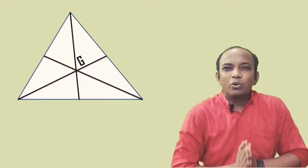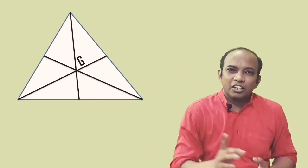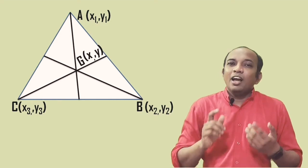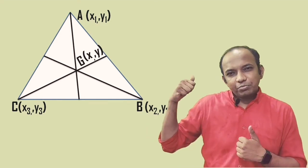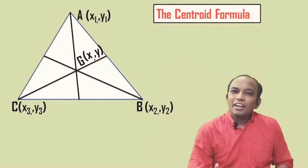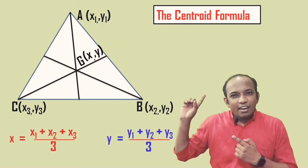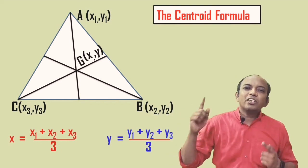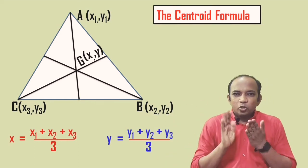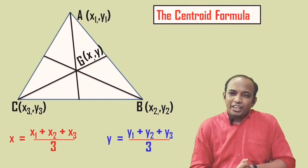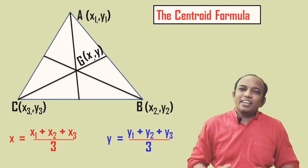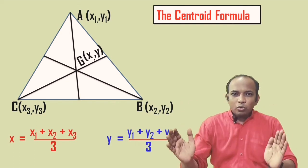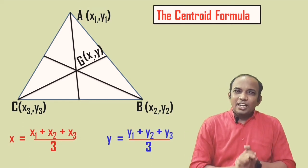Now let's understand how to calculate the coordinates of the centroid when the coordinates of all three vertices are given. Here are the coordinates of vertices A, B, C as x1 y1, x2 y2, and x3 y3. Consider the coordinate of G as x and y. By the centroid formula, x equals (x1 + x2 + x3) / 3, and y equals (y1 + y2 + y3) / 3. Add all three x-coordinates and divide by three to get the x-coordinate of the centroid; same applies for y.